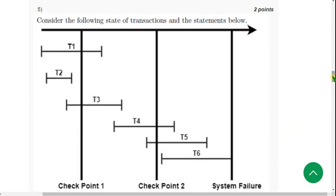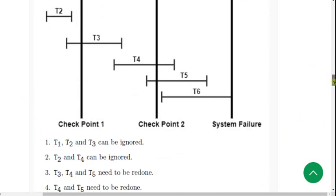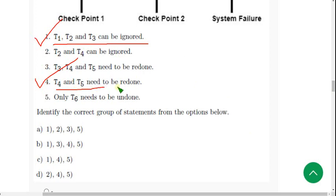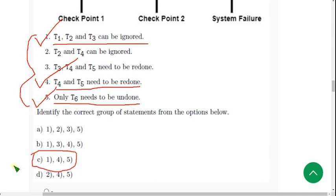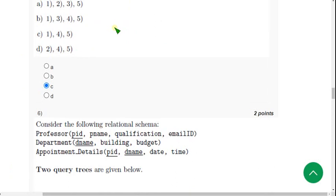Question 5: Given a state of transactions with a checkpoint, identify the correct statements. The probable correct statements are: T1, T2, and T3 can be ignored; T4 and T5 need to be redone; and only T6 needs to be undone. These correspond to statements one, four, and five — that is option C. Mark option C.